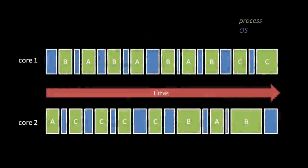A primary purpose of modern operating systems is to allow for multiple processes to run concurrently, meaning at the same time. The problem is that each CPU core can only execute the code of one process at a time, and the OS's own code can't run on a core at the same time as any process. The solution is to have each CPU core alternate between running each open process and running OS code.